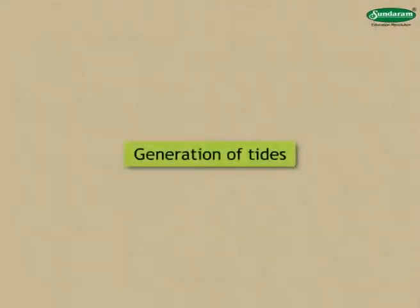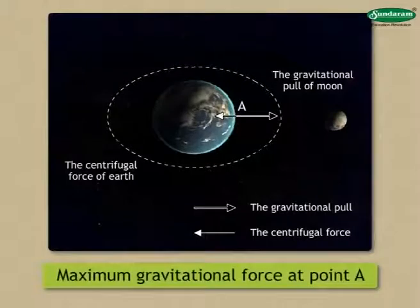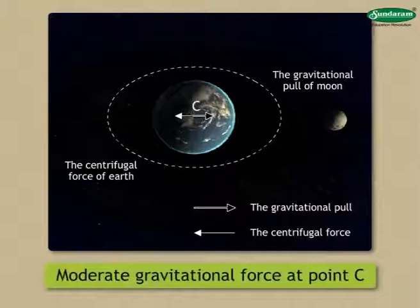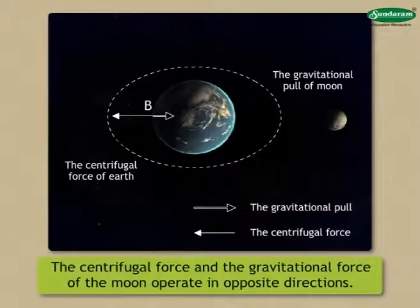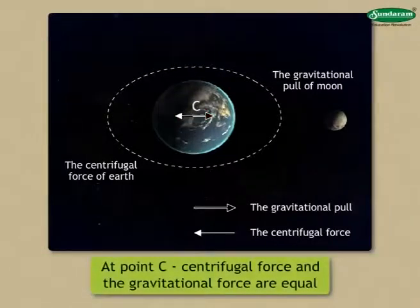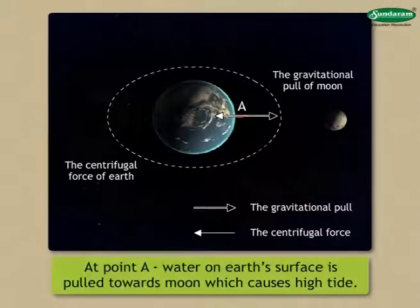Let us try to understand how tides are generated by the moon. Point A on the earth is closer to the moon, so the gravitational force of the moon is maximum at this point. At point C it will be moderate, and at point B it will be minimum. The centrifugal force caused by the relative motions of the earth and the moon and the gravitational force of the moon operate in opposite directions. At point C both the forces are equal. At point B, the gravitational force of the moon exceeds the centrifugal force, so the water on the earth's surface is pulled towards the moon and this causes high tide.